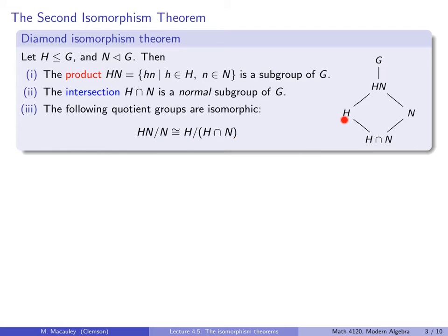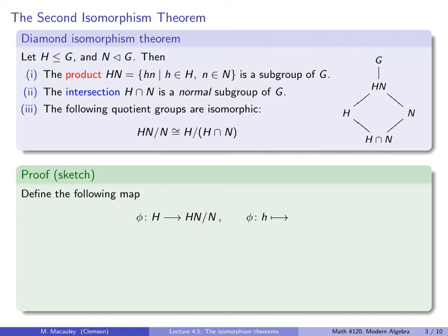So we have a group G, and we have two subgroups H and N. We know N is normal in G, but we don't know anything about H. This product HN — all products of things in H with things in N — is a subgroup of G. It might be all of G, it doesn't have to be. It clearly contains both H and N: you can get H by taking products of things in H with the identity in N, and you can get N by taking the identity in H with things in N. Also clear is that the intersection H intersect N is contained in both H and N.